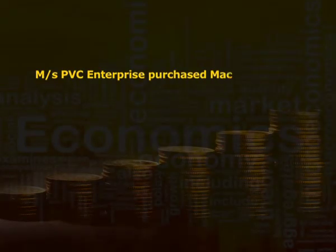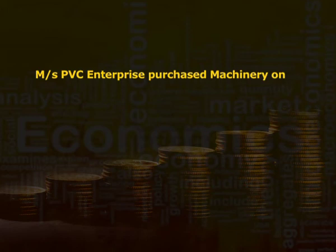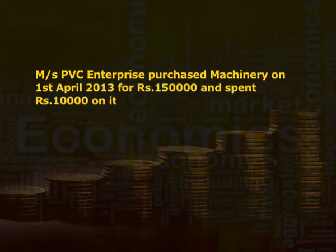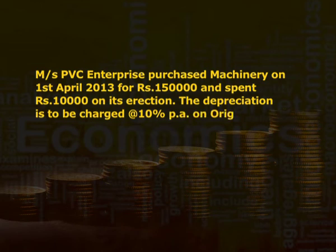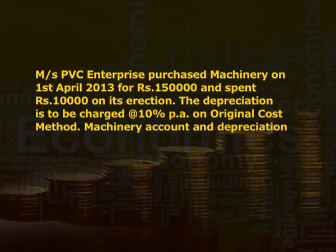Let us understand the straight line method by an example. Messrs PVC Enterprise purchased machinery on 1st April 2013 for rupees 1,50,000 and spent rupees 10,000 on its erection. Depreciation is to be charged at 10% per annum on the original cost method. The machinery account and depreciation account for 2 years will appear as shown.